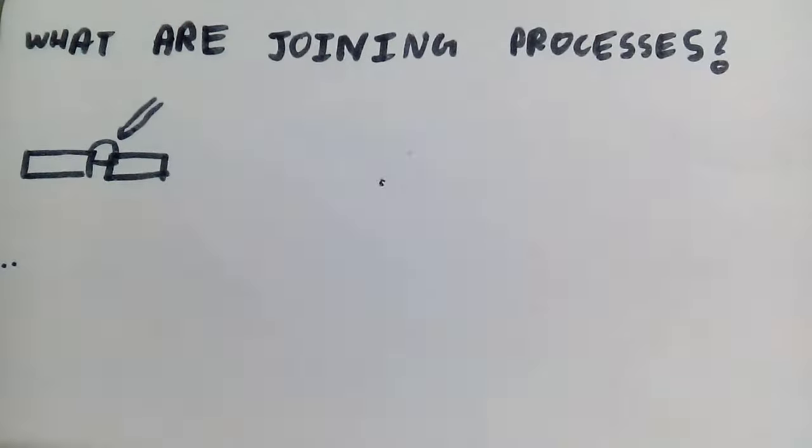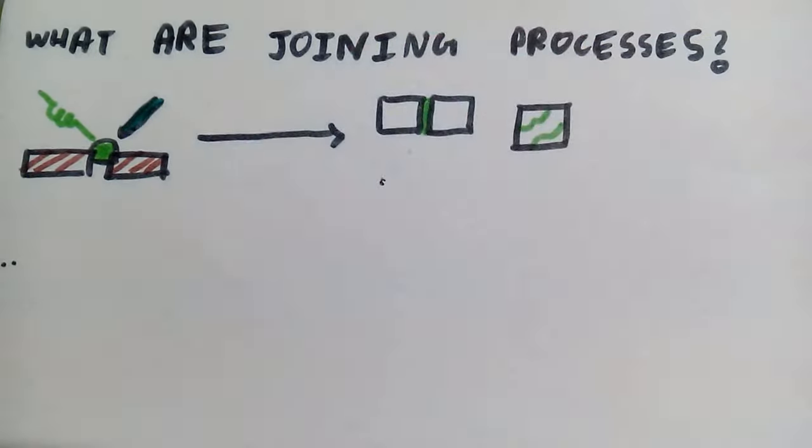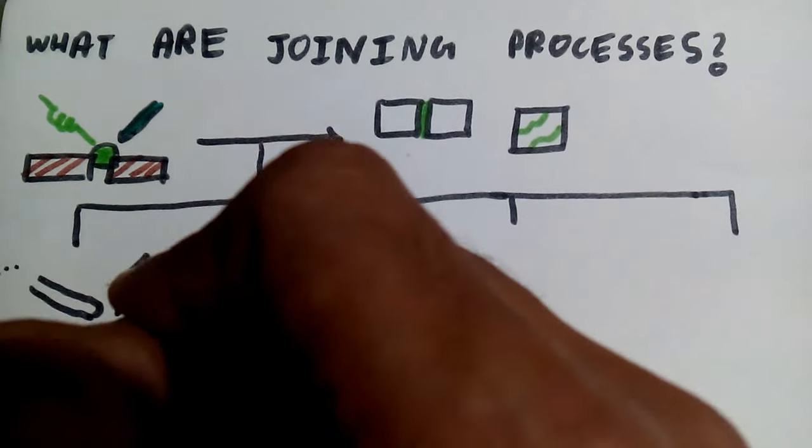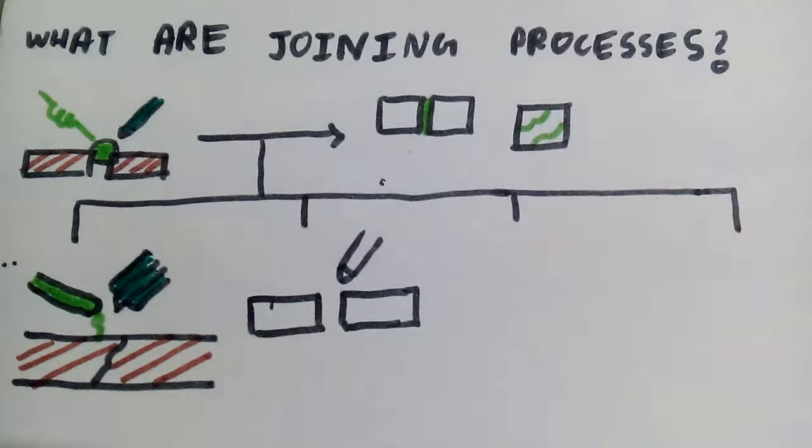What are joining processes? Joining processes are the processes that are used for joining metal parts and metal fabrication work. It consists of four types.